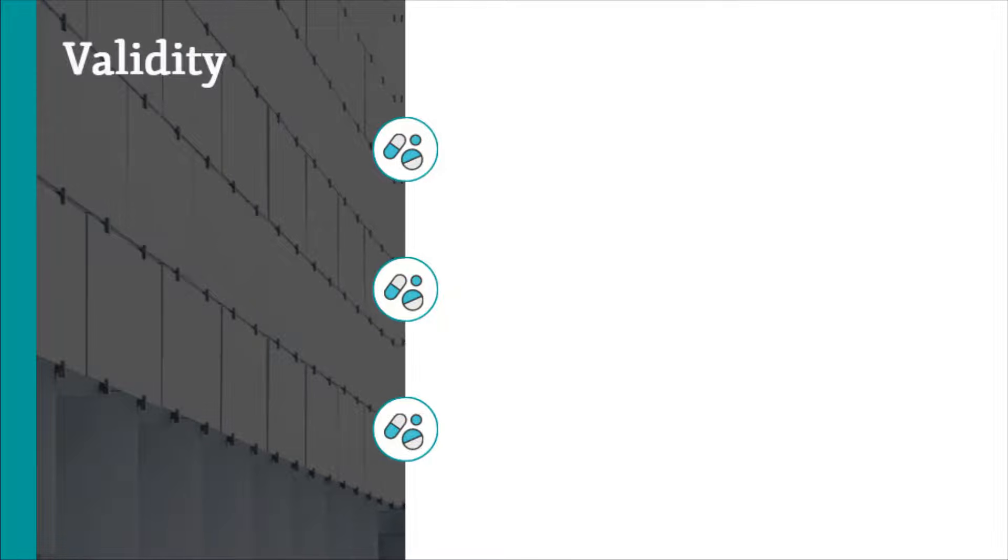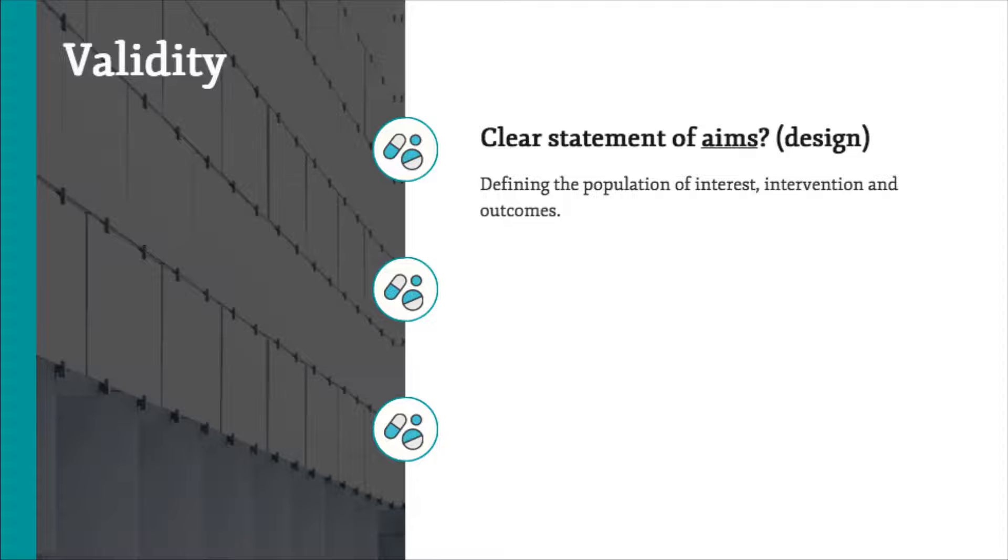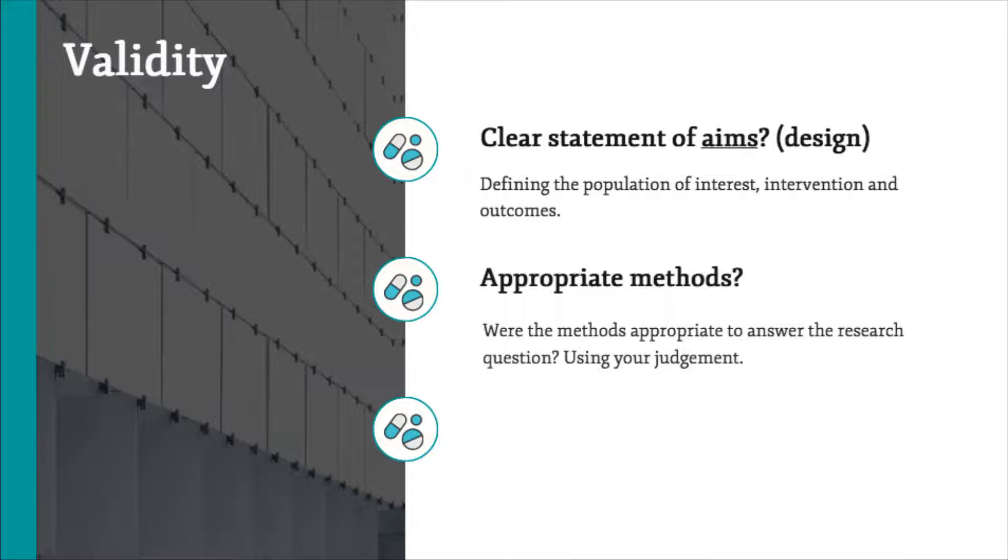Questions you may ask relating to validity may include: Is there a clear statement of aims in the research you are appraising? If authors of the research have not provided a clear research question that describes the population of interest, the intervention given or the outcomes of interest, then there could be cause for concern as to the validity of the results of the research. You also want to be clear of the methods used in a study to make sure they are suitable to answer the question that is being posed.